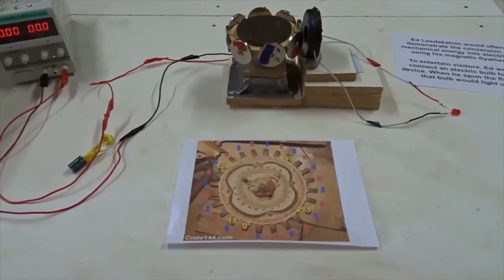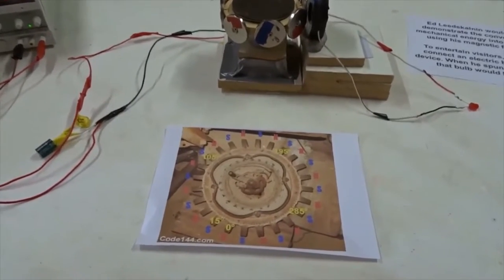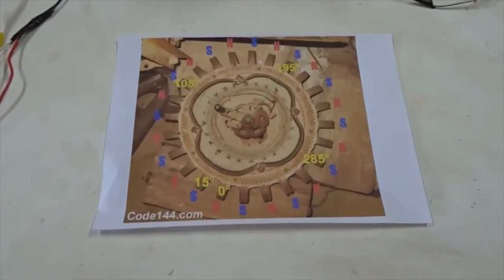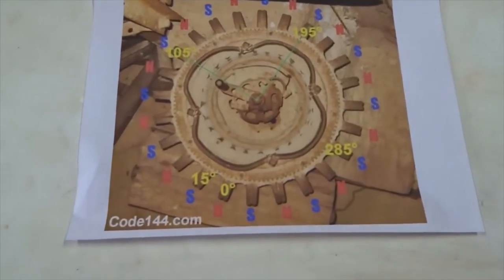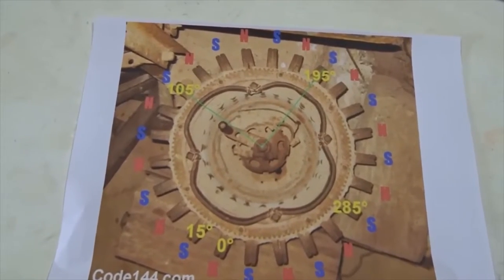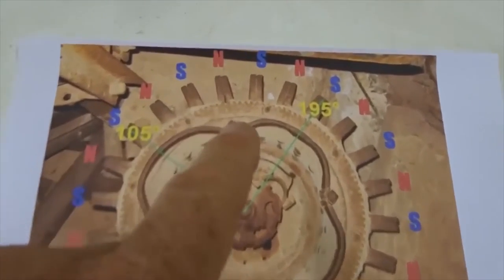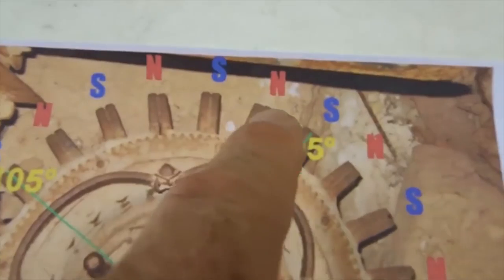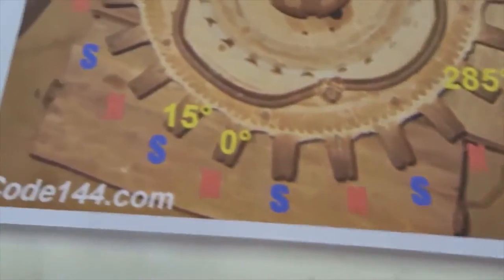As the second part of this series, we're going to study a magnetic flywheel which was made by Ed Leedskalnin at Coral Castle in the 1930s and 1940s. He made it out of old car parts, and it had 24 magnets, NS-NS, alternating all the way around the outside.